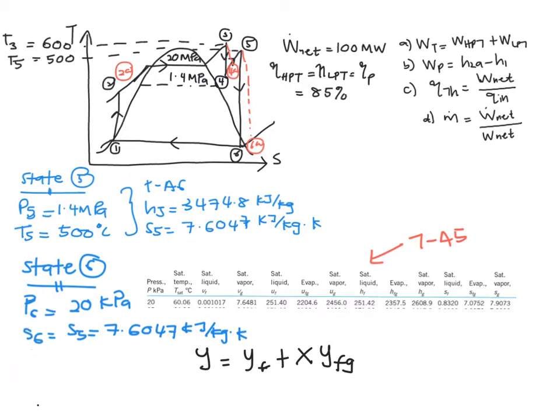So S6 equals SF plus X6 times SFG, where the values of SFG and SF you can obtain from here, and S6 you get directly from here.